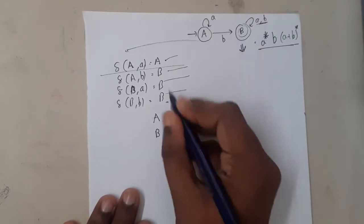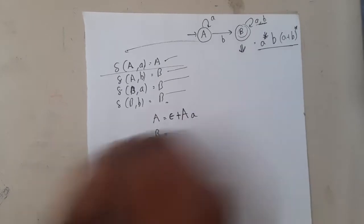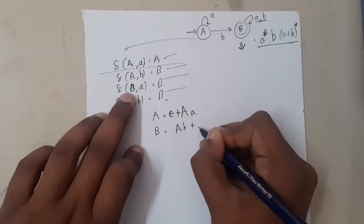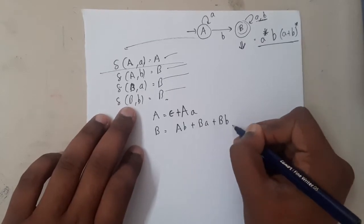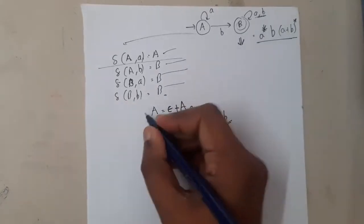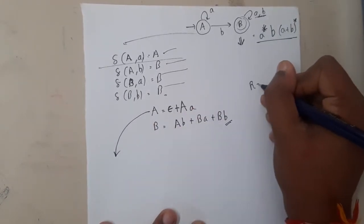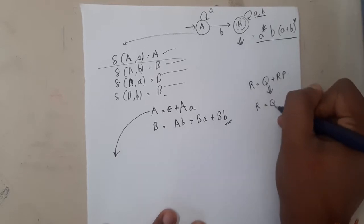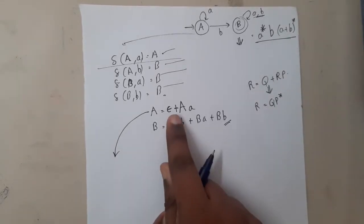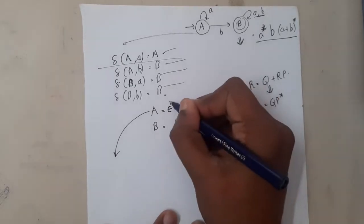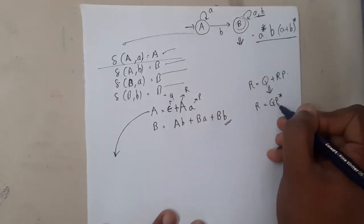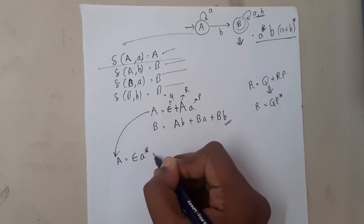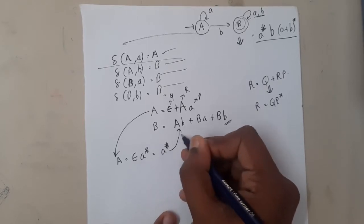Since A is the start symbol, we always write epsilon. For B, we have three options: A with b, plus B with a, plus B with b. Now let us solve equation A. If you recall the formula R = Q + PR, which simplifies to R = QP*, this equation satisfies that form. Here Q is epsilon, P is 'a', so A = epsilon · a* = a*.